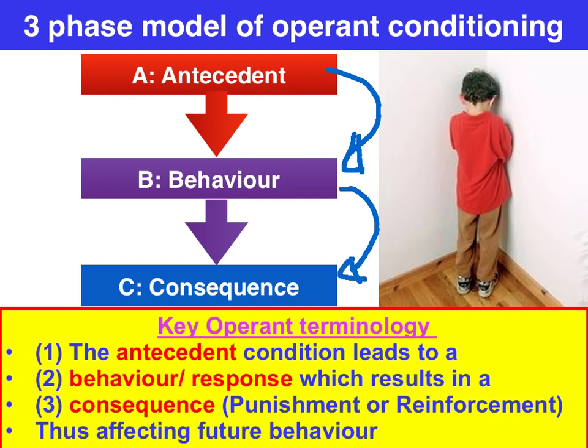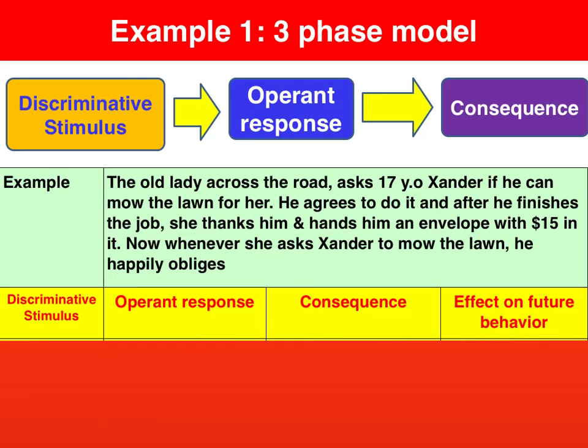The antecedent leads to the behaviour, and the behaviour will have a consequence. Now in VCE we don't use the ABC language. We use the terminology 'discriminative stimulus' for the antecedent, 'operant response' for the behaviour, and we maintain the term 'consequence'.